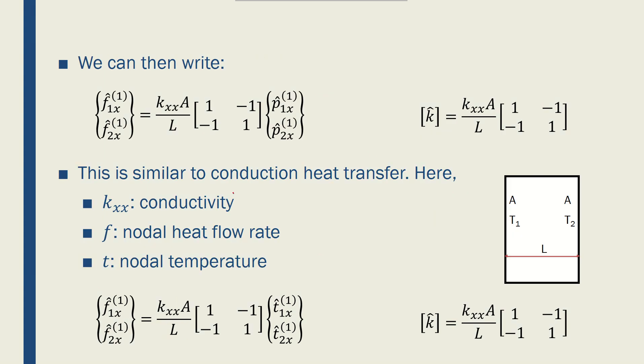We can move on to find the stiffness matrix for a 1D fluid flow problem. Now we have the fluid flow rate here. It's a vector 2 by 1, and we have the potentials per node, which is also a 2 by 1. So we found a 2 by 2 stiffness matrix for the 1D fluid flow rate, or 1D fluid flow.